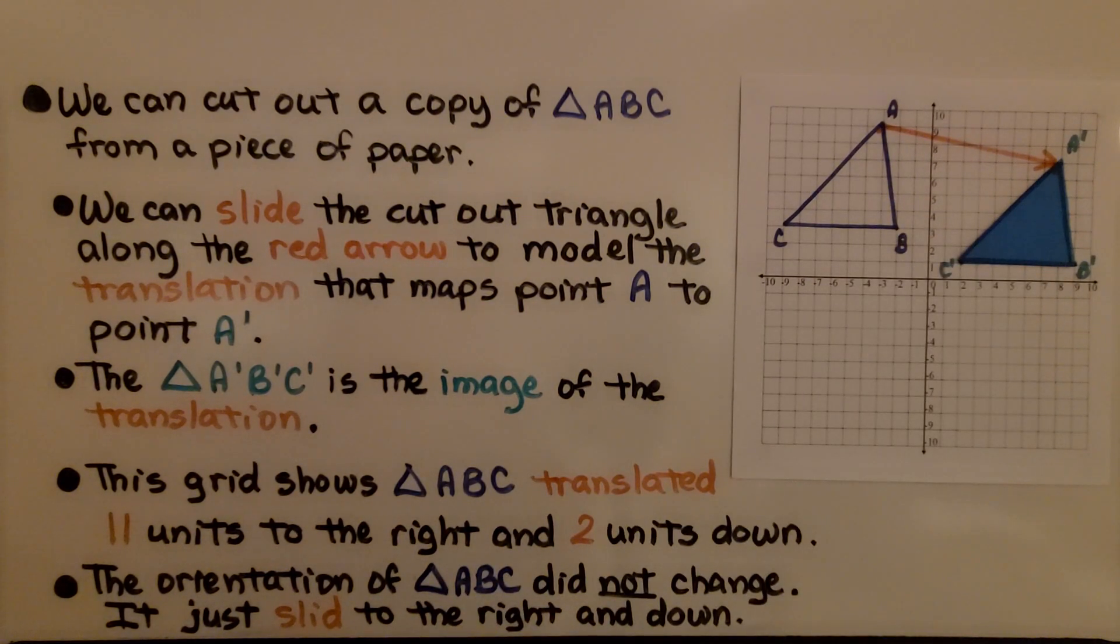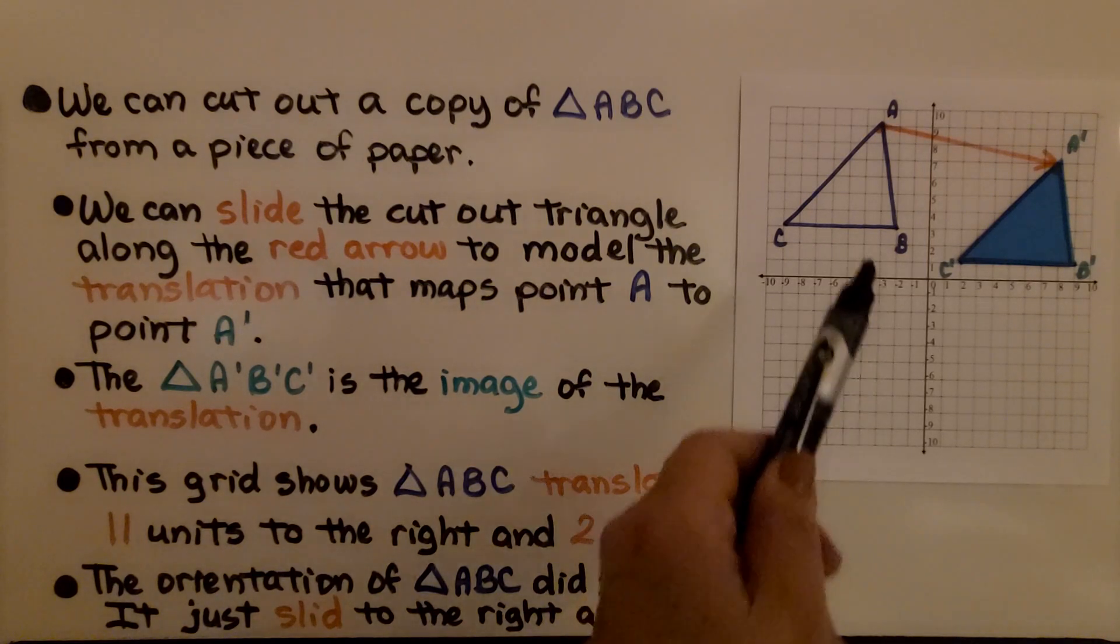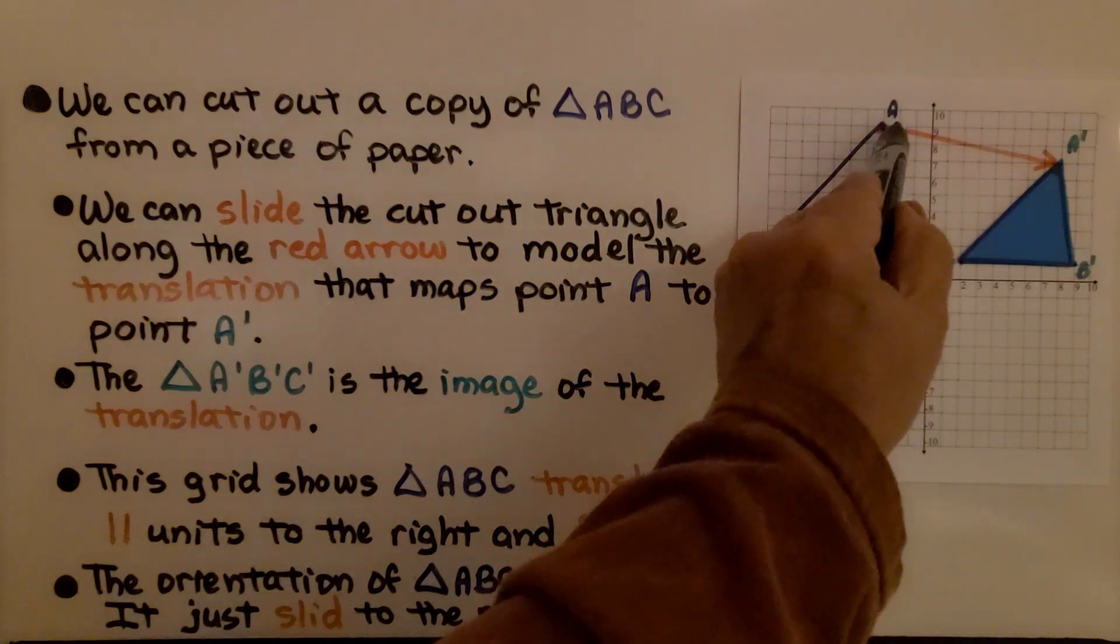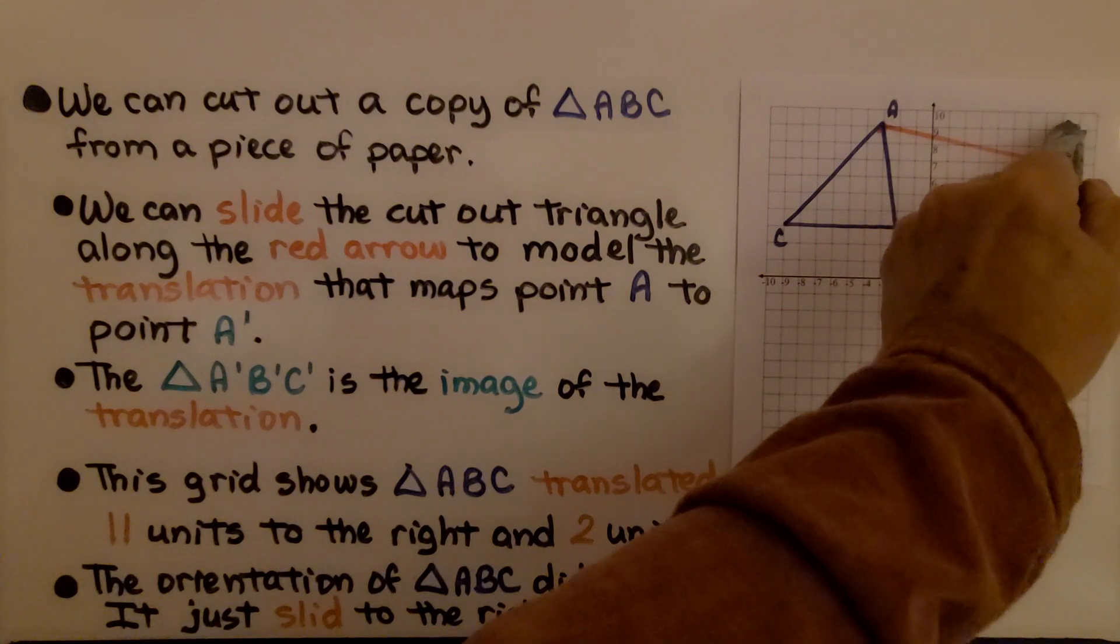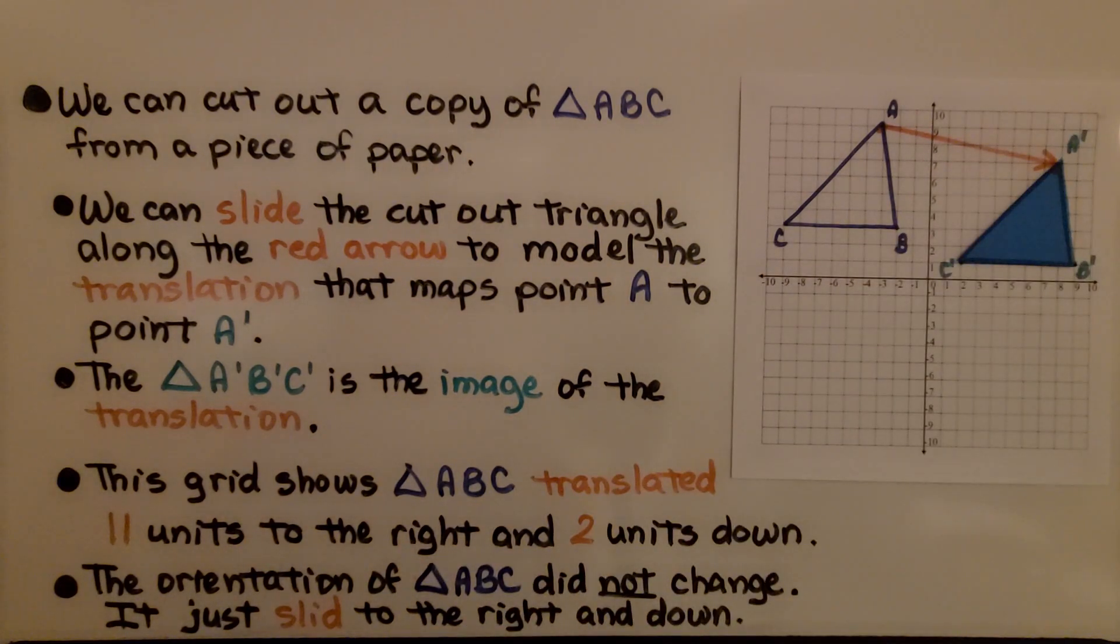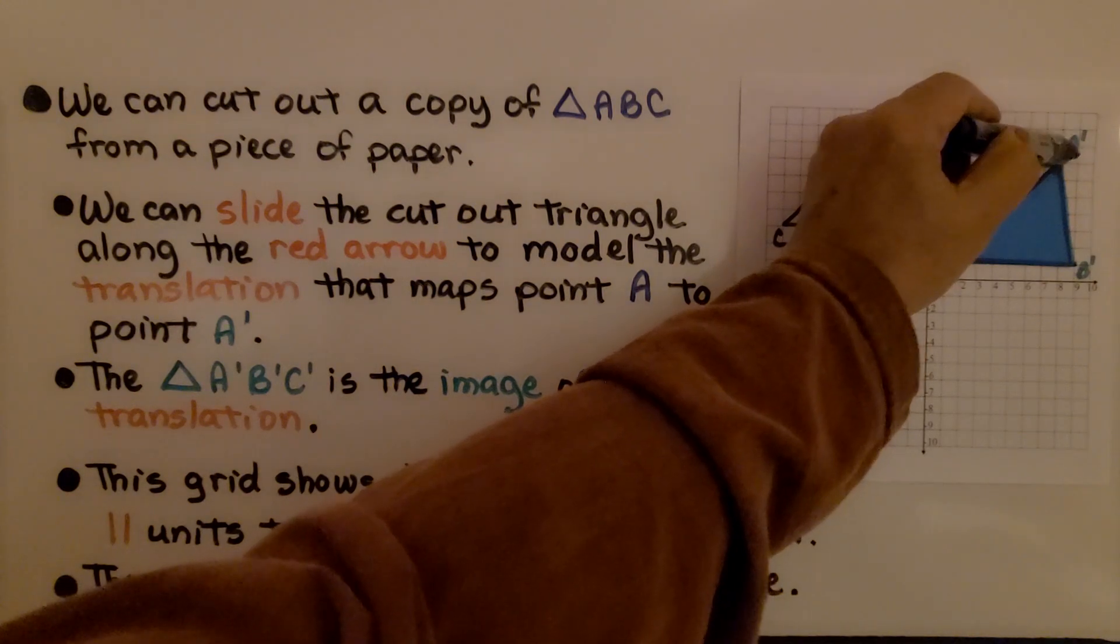The triangle A prime, B prime, C prime is the image of the translation. This grid shows triangle ABC translated 11 units to the right and then 2 units down. One, two.